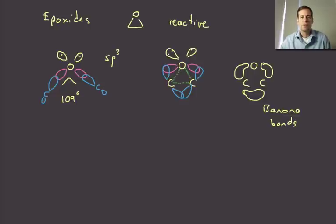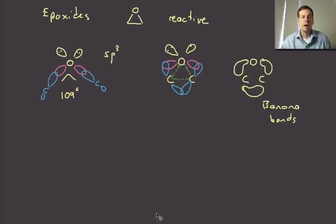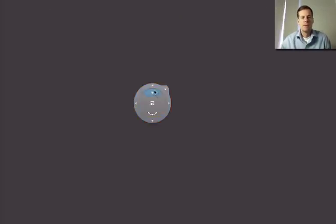So the ring strain ends up explaining a lot of the chemistry of epoxides. So first question is to remind ourselves, how can we make epoxides? So again, I think that you've probably seen the common methods, but we can talk about them again very briefly. So preparation of epoxides.